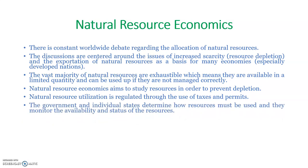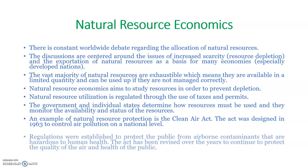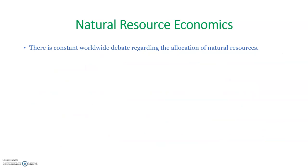Natural resource utilization is regulated through the use of taxes and permits. Governments and individual states determine how resources must be used and monitor their availability and status. An example of natural resource protection is the Clean Air Act, designed in 1963 to control air pollution on a national level. Regulations were established to protect the public from airborne contaminants hazardous to human health, and the act has been revised over the years to continue protecting air quality and public health.